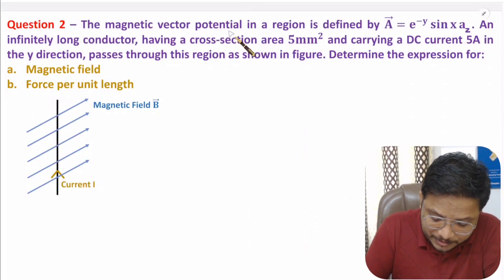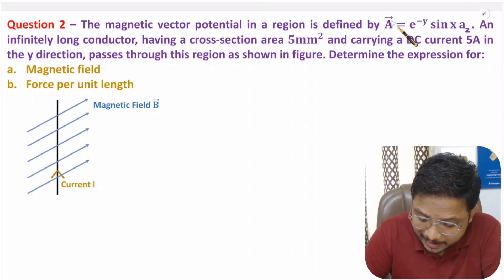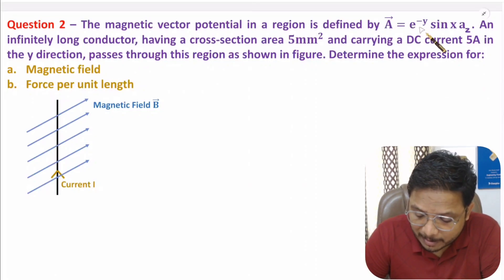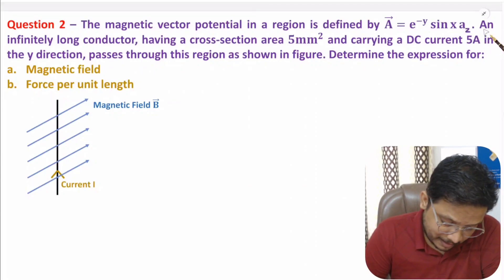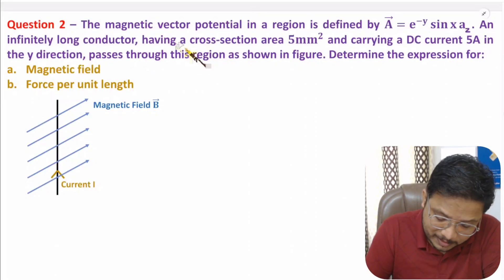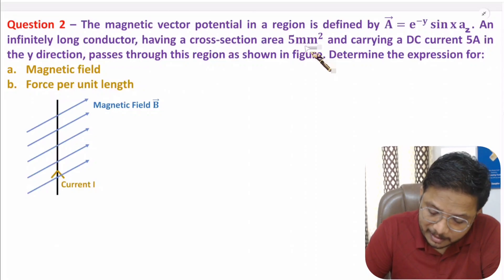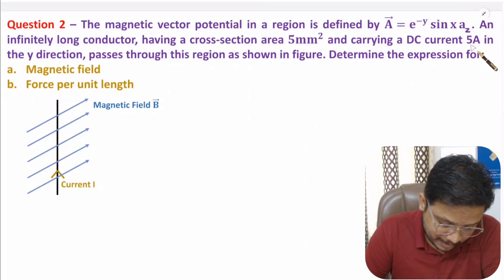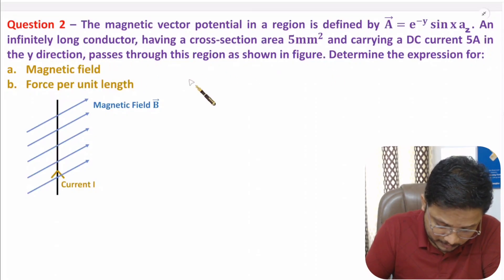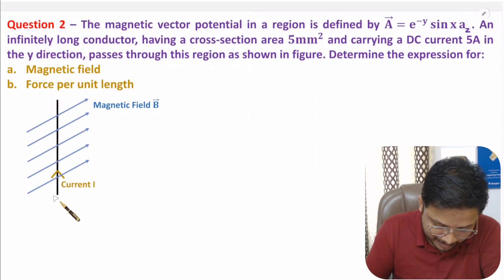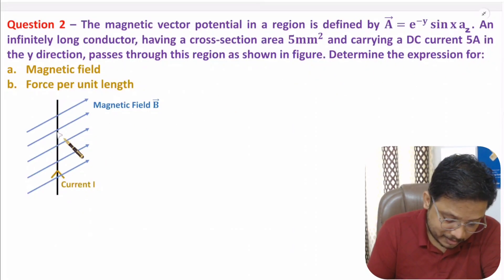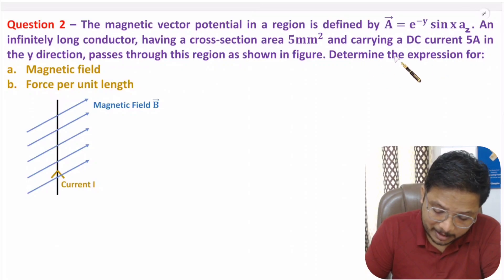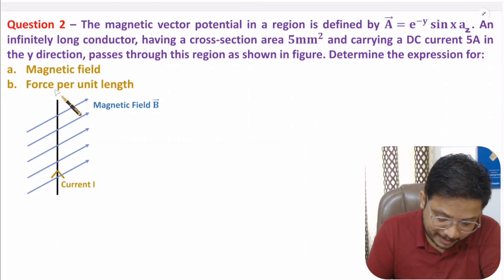In the second question, the magnetic vector potential in a region is defined by vector A = e^(−y) sin(x) in the â_z direction. An infinitely long conductor has a cross-sectional area of 5 mm² and carries a DC current of 5 amperes in the y-direction, passing as shown in the figure. We need to determine the expression for magnetic field and force per unit length.